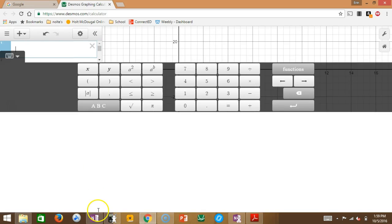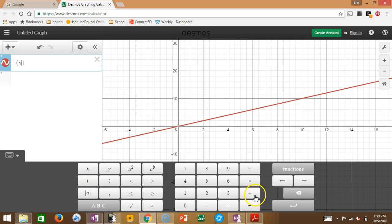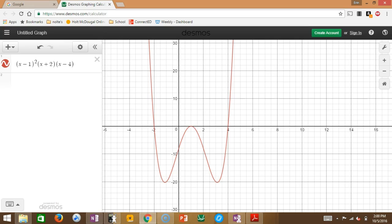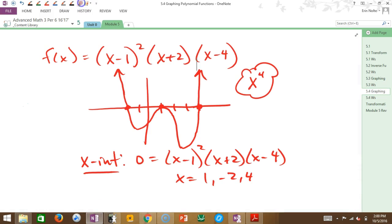So, I had x minus one squared, x plus two, x minus four. So, my drawing was a little off. This one was like a perfect, like, it was like totally symmetrical.